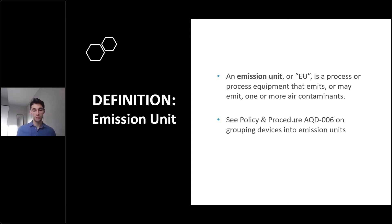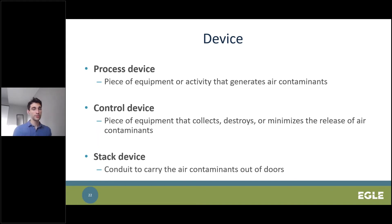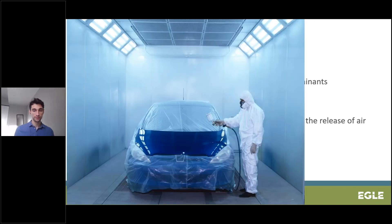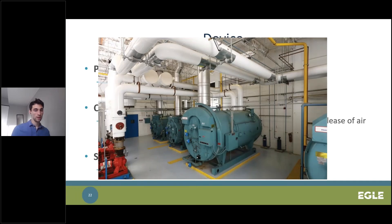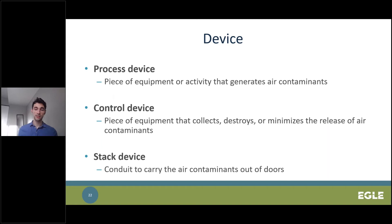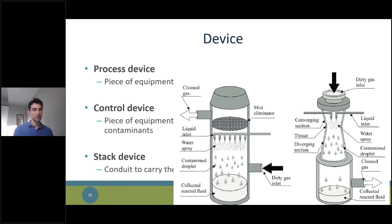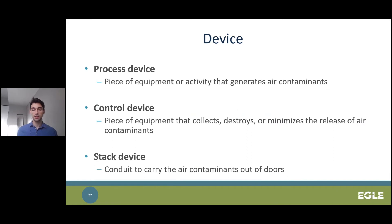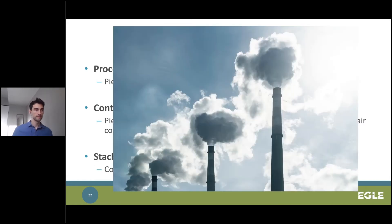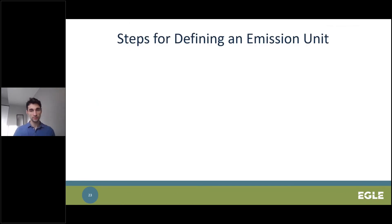An emission unit can be made up of one or more devices: process devices, control devices, and stack devices. A process device is a piece of equipment or activity that generates air contaminants — for example, a paint booth or a boiler. Control devices are equipment that collects, destroys, or minimizes the release of air contaminants, such as a baghouse filter or a wet scrubber. Stack devices are conduits that carry air contaminants outdoors.